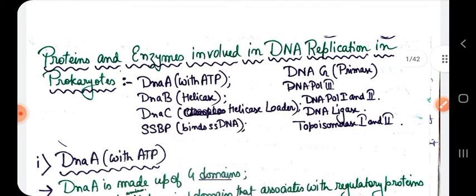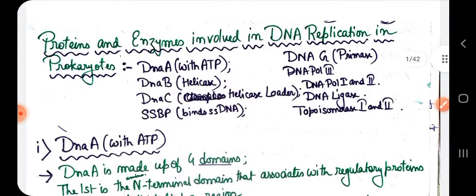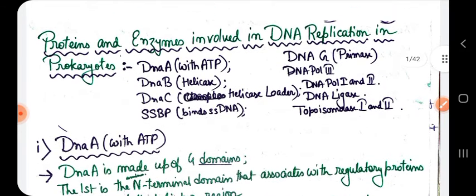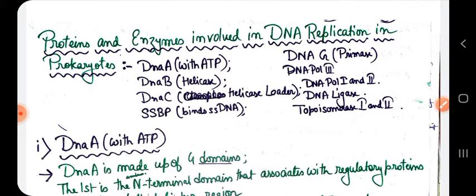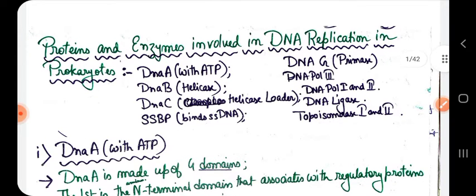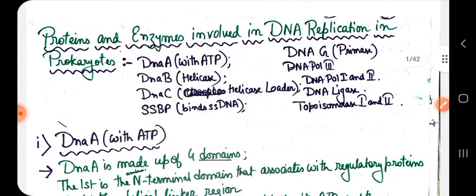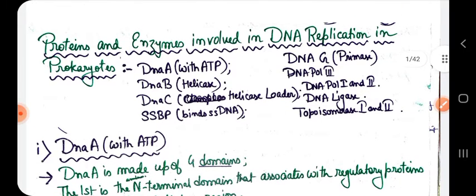The first protein is DnaA. DnaA is the initiator enzyme which actually unwinds the DNA at the origin of replication, and with the help of ATP they do this work. Then comes DnaB. DnaB is your helicase — it just acts like a zip opener, unwinding the two DNA strands, and it leads to the formation of the replication fork.